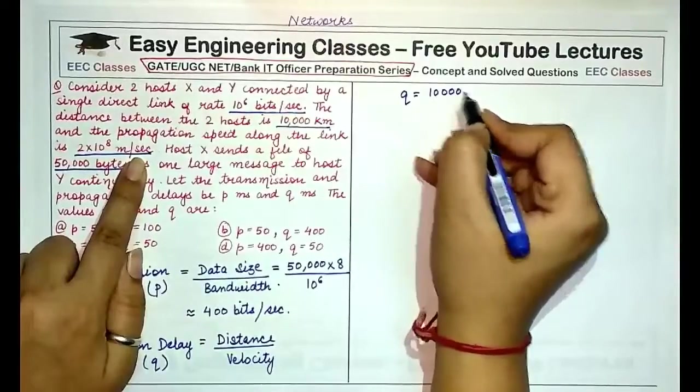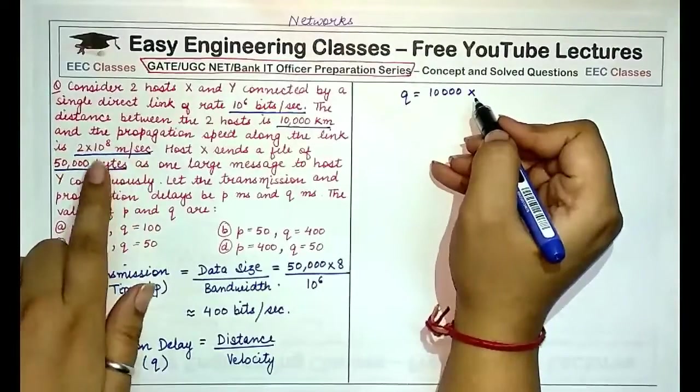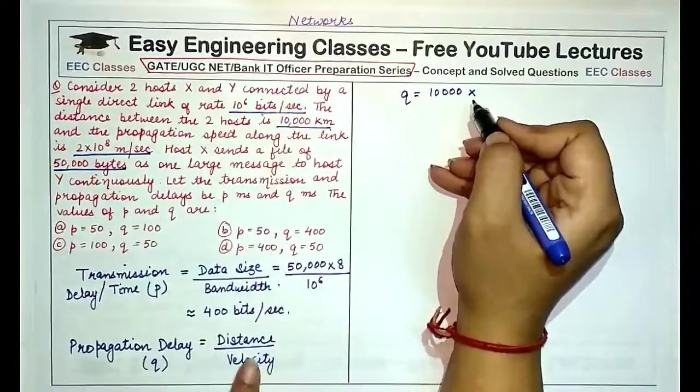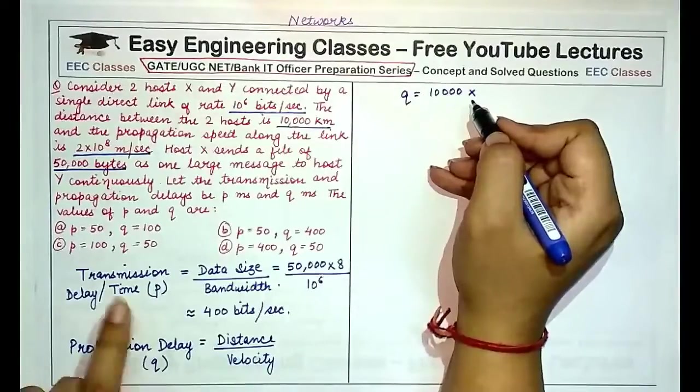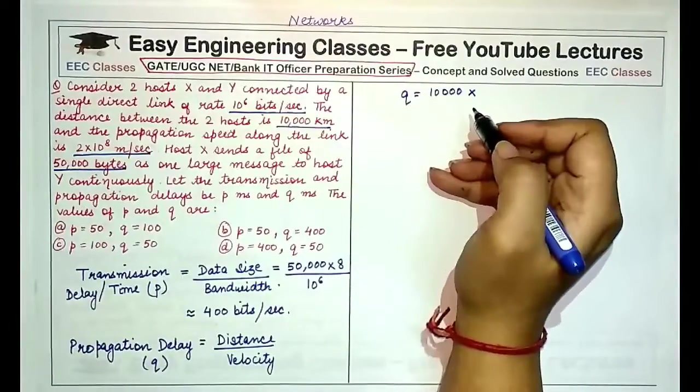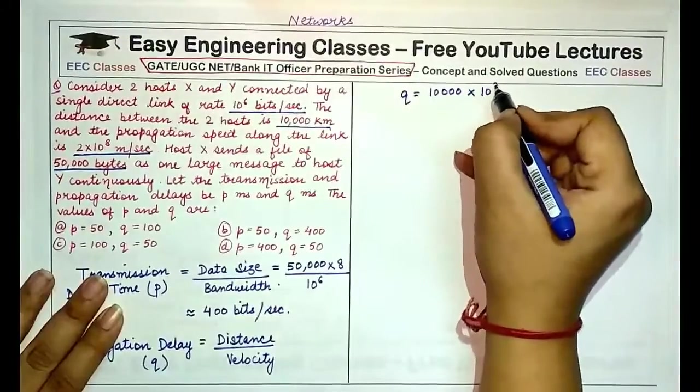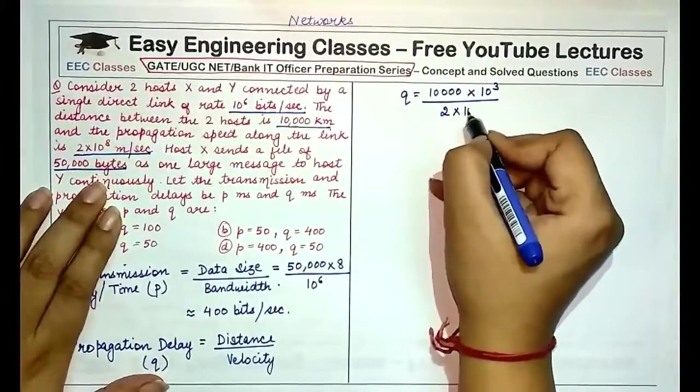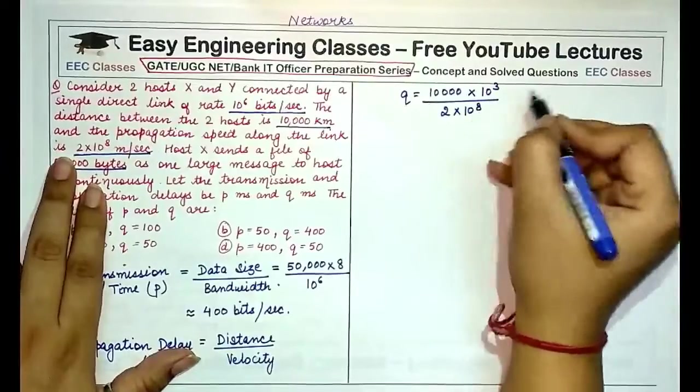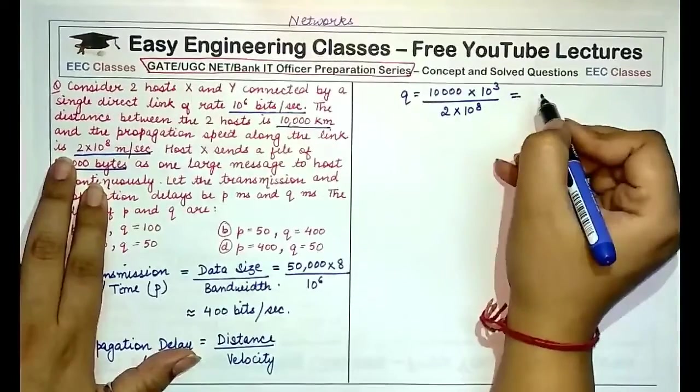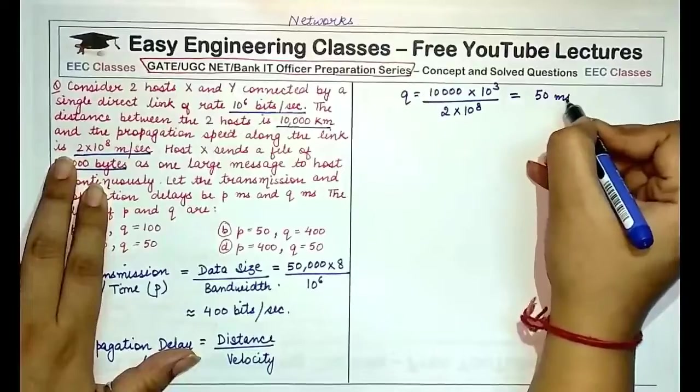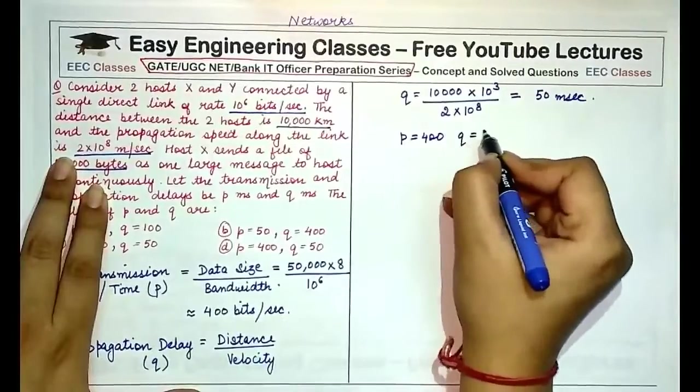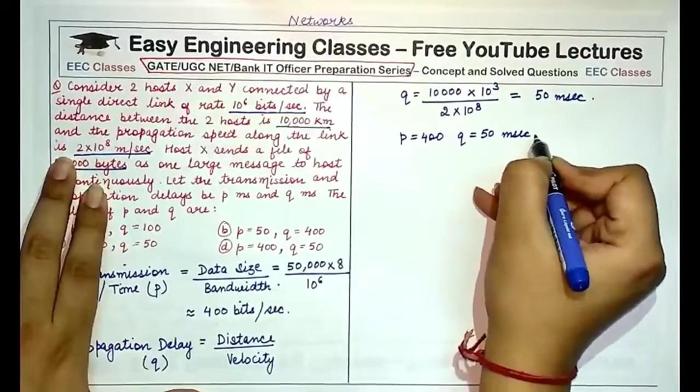Again, you have to be careful that the distance is in kilometers, so you have to convert it into meters, or you convert the value of meters per second into the corresponding value in which the distance is given, all right, so that the answer comes with the correct unit. So this I'm converting into meters by multiplying it by 10^3, divided by the velocity 2×10^8 meters per second. This would come out to be 50 milliseconds. All right, so the value of p is 400 and the value of q is 50 millisecond, so 400 millisecond. So the answer is 400 and 50, the option is D.